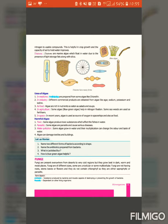What are diatoms? These are marine algae, which means they are living in water. They float on the water due to the presence of light storage fats along with silica. They float on the water because they have fats and silica. There are many diagrams that you can see showing many forms of diatoms.